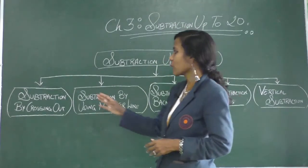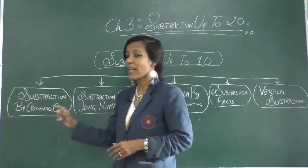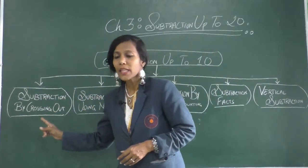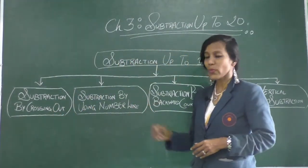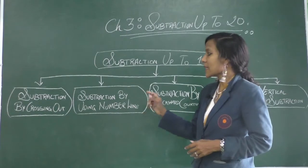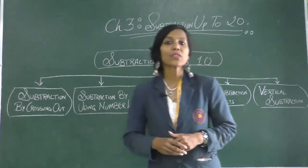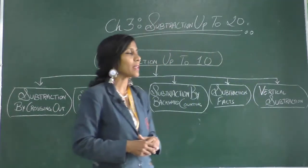Under subtraction up to 10, we had subtraction by crossing out. Next we did subtraction by using a number line.